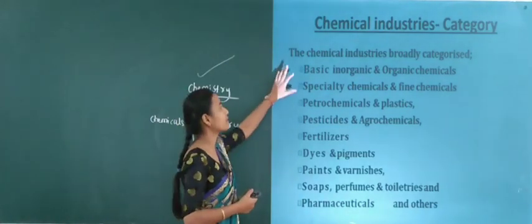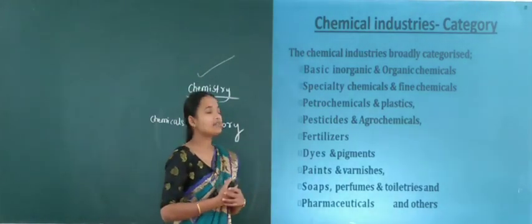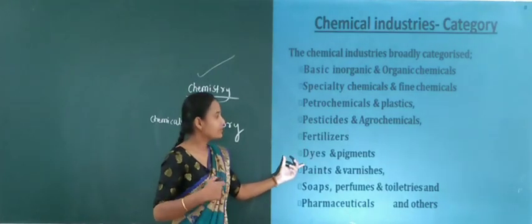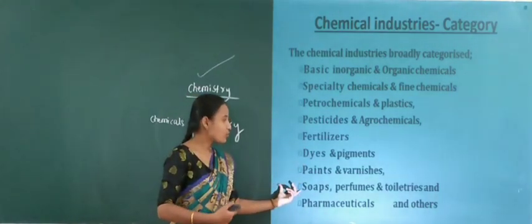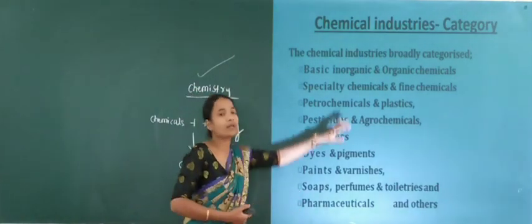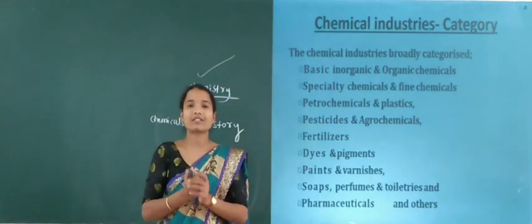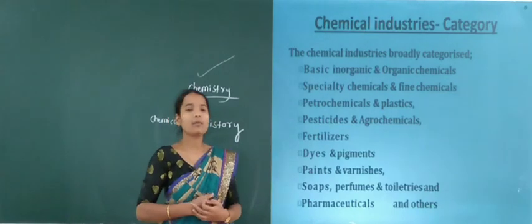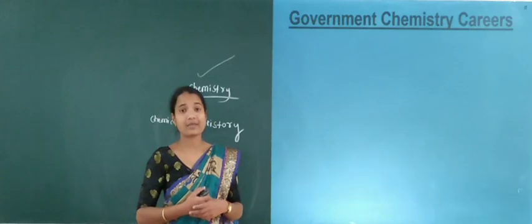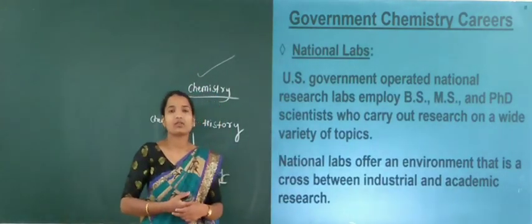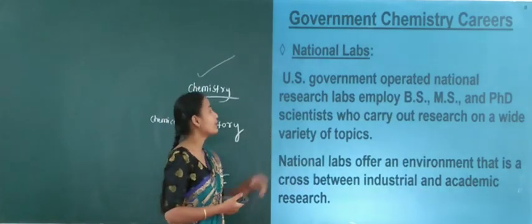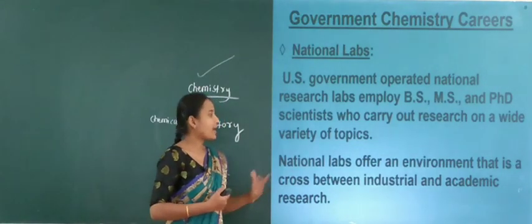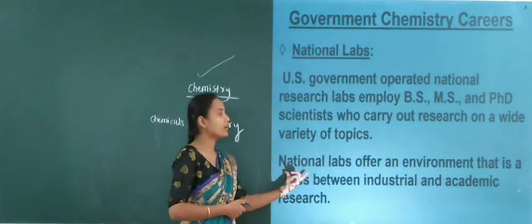In particular industries, you have: basic inorganic and organic chemicals, special chemicals and fine chemicals, petrochemicals and plastics, pesticides and agrochemicals, fertilizers, dyes and pigments, paints and varnishes, soaps, perfumes, and pharmaceuticals, and others. For BSc, MSc, and PhD scientists who carry out research on a wide variety of topics — national labs often on environmental topics — that is a cross between industrial and academic research.